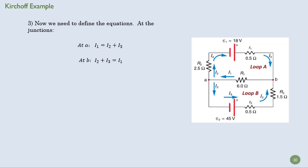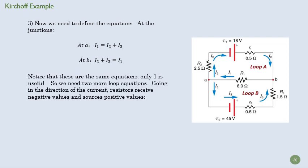It doesn't help us solve the problem to have two equations that are the same. But notice we have two loops and two junctions and three unknowns. So we actually knew that one of those equations was going to be extra superfluous. So we take that equation. This gives us one equation. So now we need to do the loop.